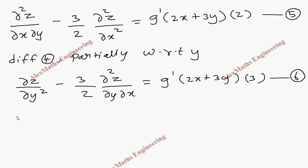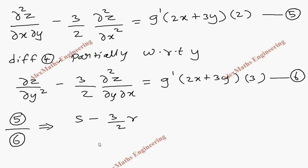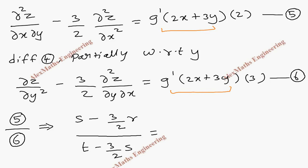Now we are going to divide the fifth expression by the sixth expression. This can be written as (s minus 3/2 into r) divided by (t minus 3/2 into s). While dividing, those two terms get cancelled, so we are left with 2/3.